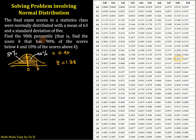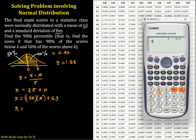What's the 90th percentile? We are going to solve for x, given that z is 1.28, mean is 63, and standard deviation is 5. To solve for x, we use the formula x equals z times the standard deviation plus the mean. Our z is 1.28 times 5 plus 63. So x equals 1.28 times 5 plus 63, and that equals 69.4.